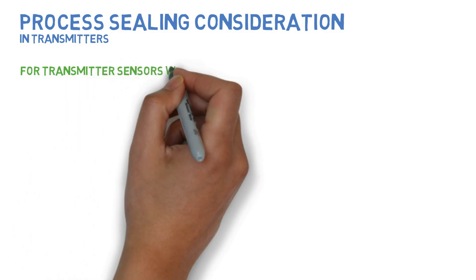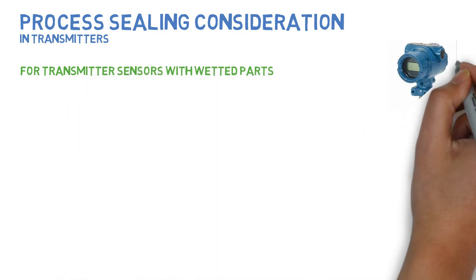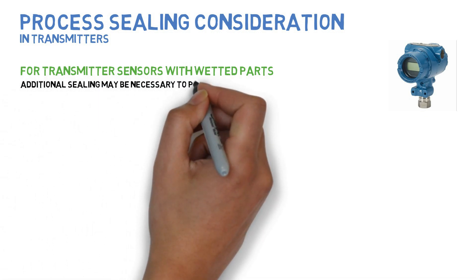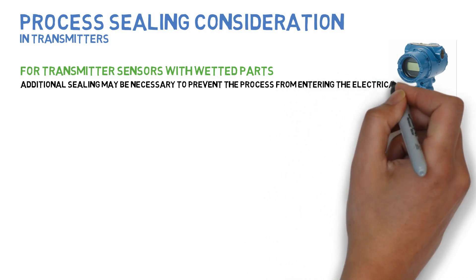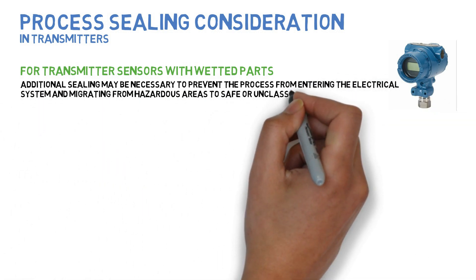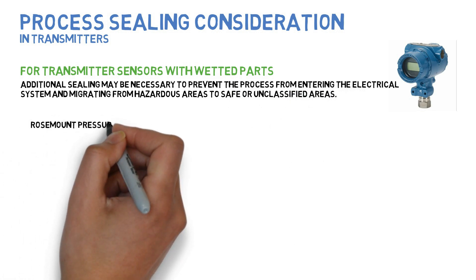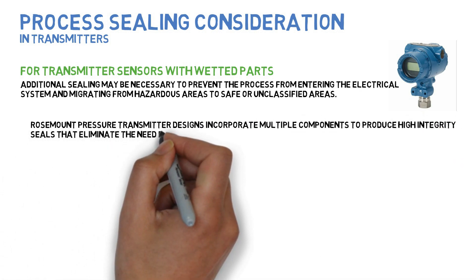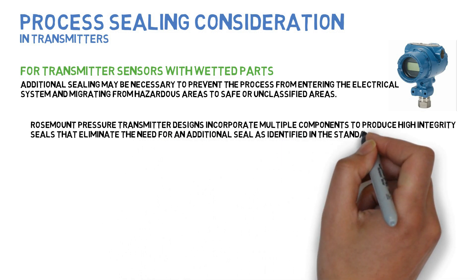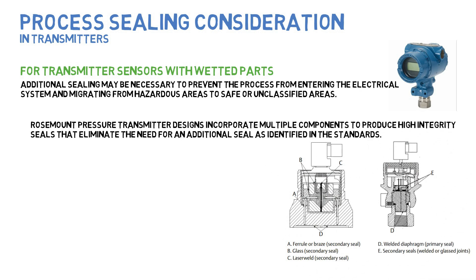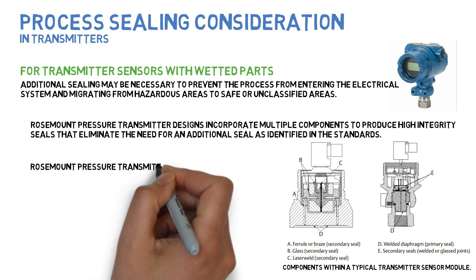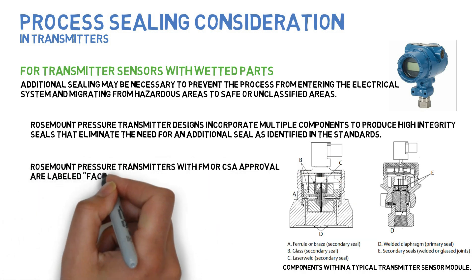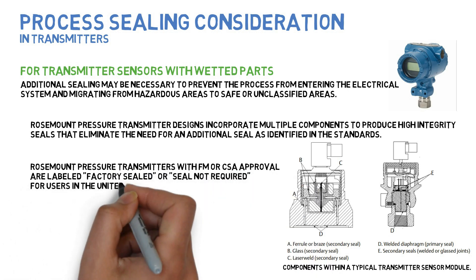For transmitter sensors with wetted parts, additional sealing may be necessary to prevent the process from entering the electrical system and migrating from hazardous areas to safe or unclassified areas. Rosemount pressure transmitter designs incorporate multiple components to produce high integrity seals that eliminate the need for an additional seal as identified in the standards. Components within a typical transmitter sensor module are shown in the diagram above.